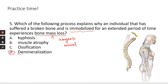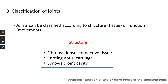Kyphosis is an abnormal curvature of your spine — specifically when your spine has an abnormal outward curvature, giving you a hunch back. Muscle atrophy is about muscles, not bones. Ossification is almost the opposite of demineralization — your body is making osseous tissue — so it's not the correct answer.